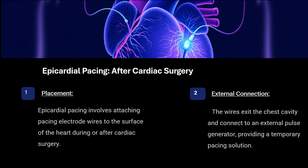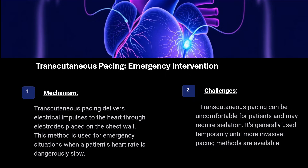What are the types of temporary pacemaker? First, epicardial pacing, which can be used after cardiac surgery. This attaches pacing electrode wires to the surface of the heart during or after cardiac surgery. The wires exit the chest cavity connected to an external pulse generator to provide a temporary pacing solution. The second type is transcutaneous pacing, which is an emergency intervention used to deliver electrical impulse to the heart through electrodes placed on the chest wall. This method is used for emergency situations when the heart rate suddenly drops.